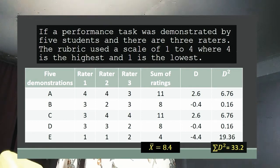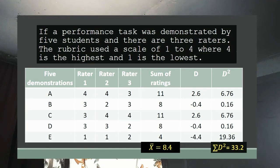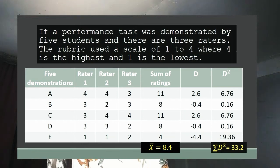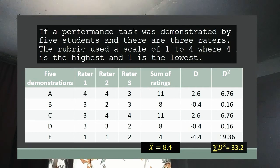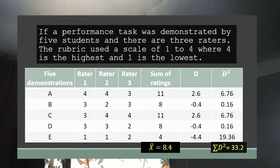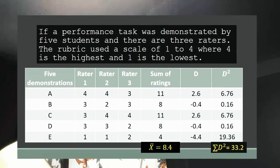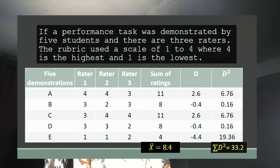We have 3 raters or observers — rater 1, rater 2, and rater 3 — and the sum of the ratings of the 3 observers. The sum of ratings for letter A is 11, B is 8, C is 11, D is 8, and E is 4. The mean of the sum of ratings is obtained by adding all the sum of ratings and dividing by the number of demonstrations. The value D is computed by subtracting the mean of sum of ratings (8.4) from each of the 5 demonstrations. For example, 8.4 minus 11 equals negative 2.6, and 8.4 minus 8 equals negative 0.4, and so on. D squared is obtained by squaring each D value — for example, 2.6 squared equals 6.76, and 0.4 squared equals 0.16.